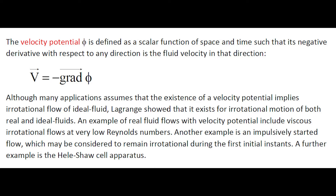The velocity potential phi is defined as a scalar function of space and time, such that its negative derivative with respect to any direction is the fluid velocity in that direction. Lagrange showed that the velocity potential exists for irrotational motion of both real and ideal fluid.